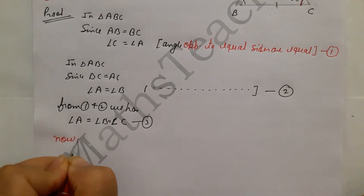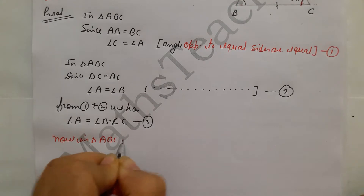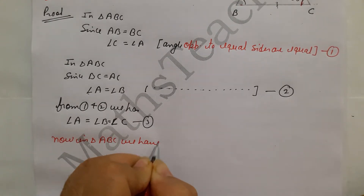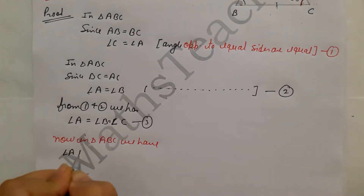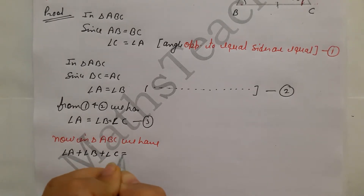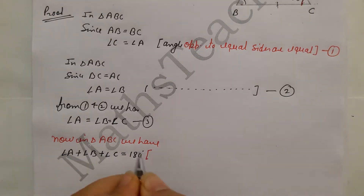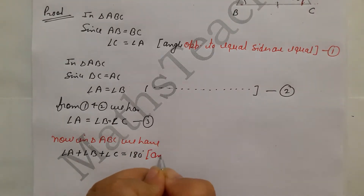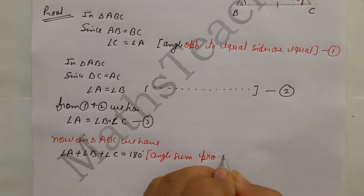In triangle ABC, by the angle sum property, angle A plus angle B plus angle C equals 180 degrees. We have read this in Class 6 — the sum of all three angles of a triangle is 180 degrees. This is the angle sum property of a triangle.